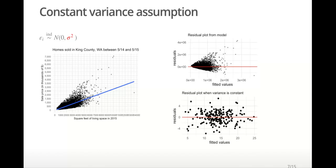Violations of the non-constant variance assumption can often be fixed by transforming the response variable. A log transformation is a common one.